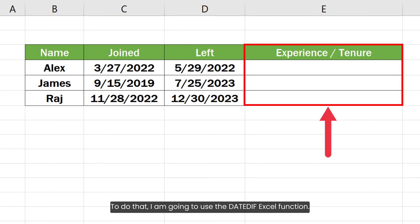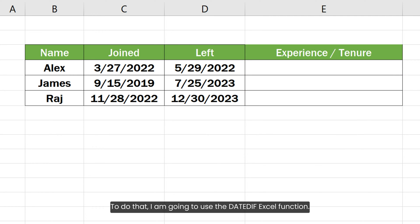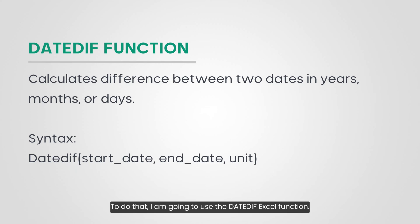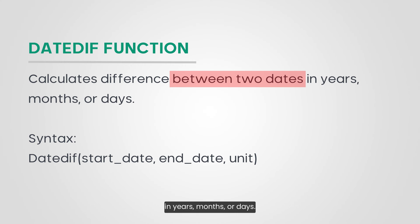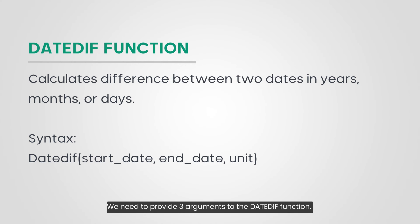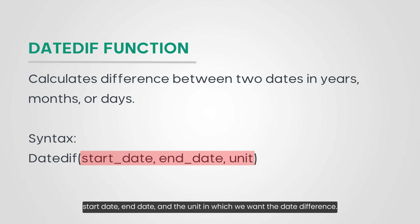To do that, I am going to use the DATEDIF Excel function. The DATEDIF function is used to calculate the difference between two dates in years, months or days. We need to provide three arguments to the DATEDIF function: startDate, endDate, and the unit in which we want the date difference.